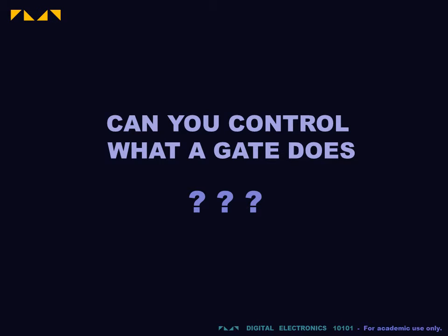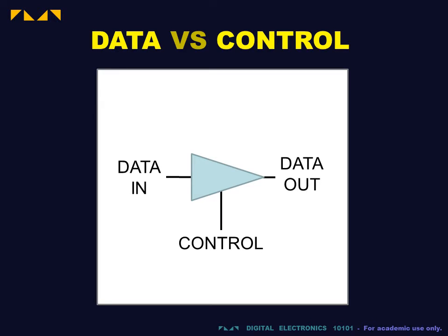We will now discuss controllable gates. There exist gates whose function can be controlled using one or more control inputs. We now thus have two classes of input: these control inputs and the regular data inputs. Control inputs are often shown entering the device from above or below.